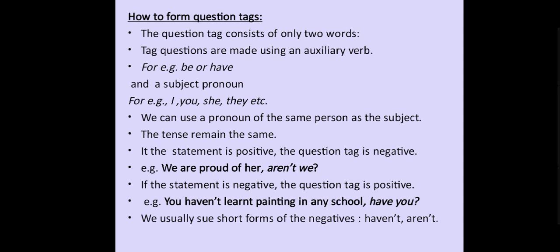Now, most important: when you write a question tag at the end of a statement, you have to put a comma. You have to write your auxiliary verb in small letters only, and you have to add a question mark at the end of the sentence. We usually use short forms of the negatives, such as 'haven't' and 'aren't.'